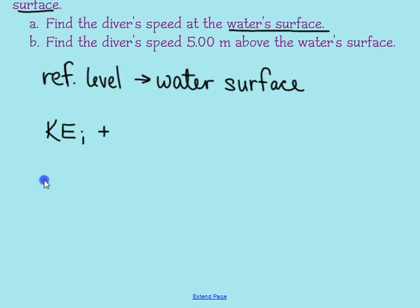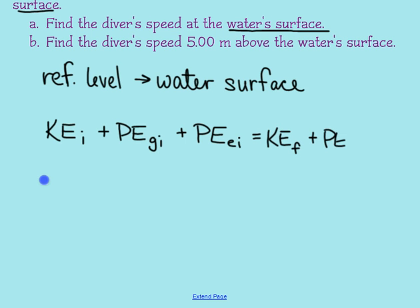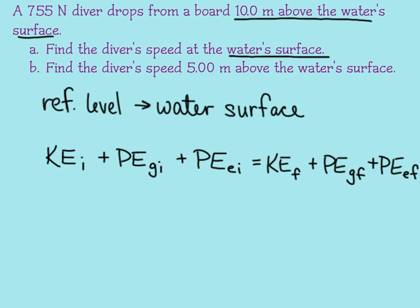Our diver could have kinetic energy, gravitational potential energy, and elastic potential energy. At the water's surface, our diver could have all three types of energy as well. Now, when our diver starts, it says he drops from a board. 'Drops' usually means it starts with a velocity of zero, which means our diver starts with no kinetic energy. Also, elastic potential energy means there are springs involved. While technically a diving board does give a little bit, that's too complicated for our level of physics, so we have no elastic potential energy.